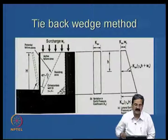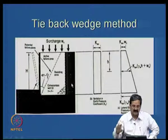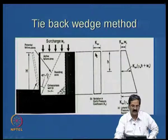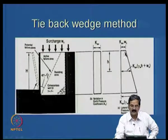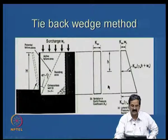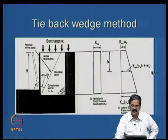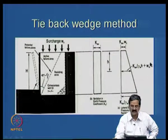This is called the tie-back wedge method. The second method, the coherent gravity method, is based on observations of many RE walls. Measured earth pressures show that for approximately the first 5 to 6 meters, the earth pressure is closer to k_naught (at-rest) condition, not active. I measured this in a case in Delhi for a 7 to 8 meter wall — pressures corresponded to k_naught, meaning no lateral strain. As wall height increases, it transitions from k_naught to k_a. So the pressure distribution diagram is bilinear — k_naught at the top transitioning to k_a lower down.